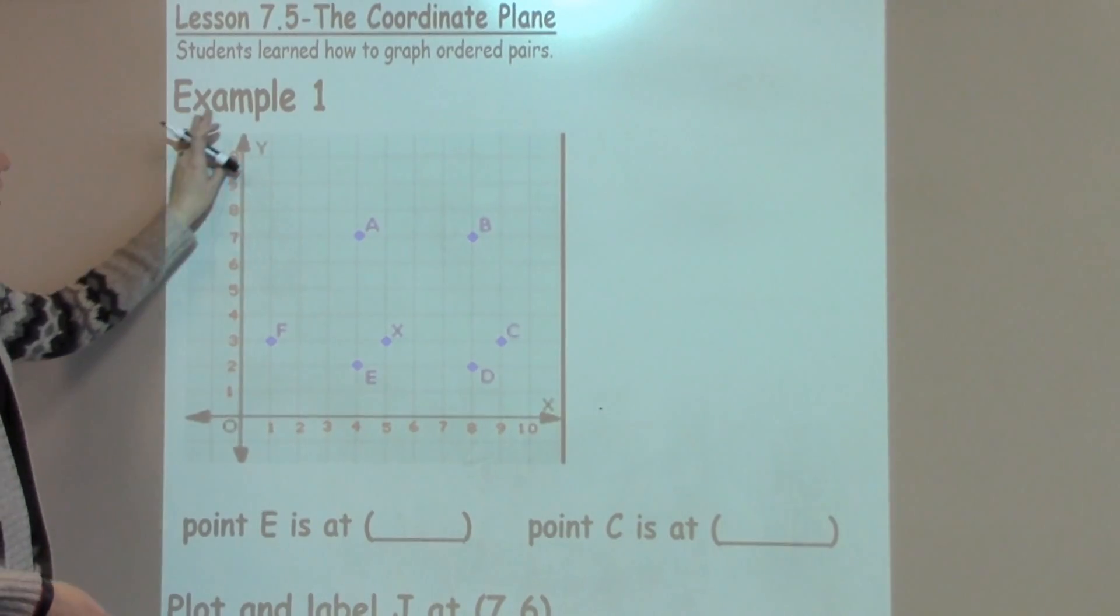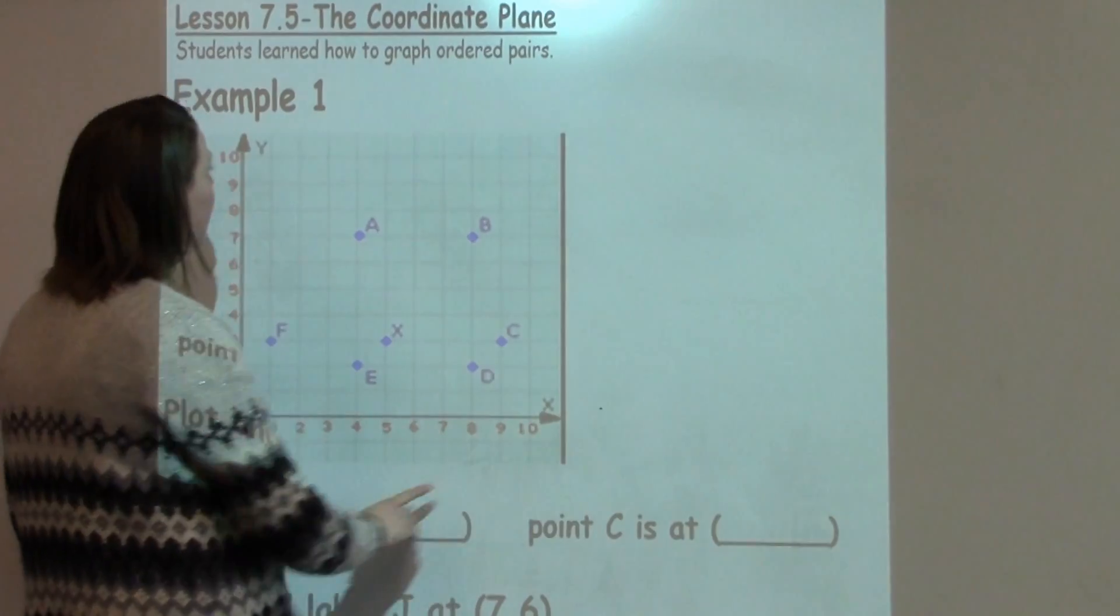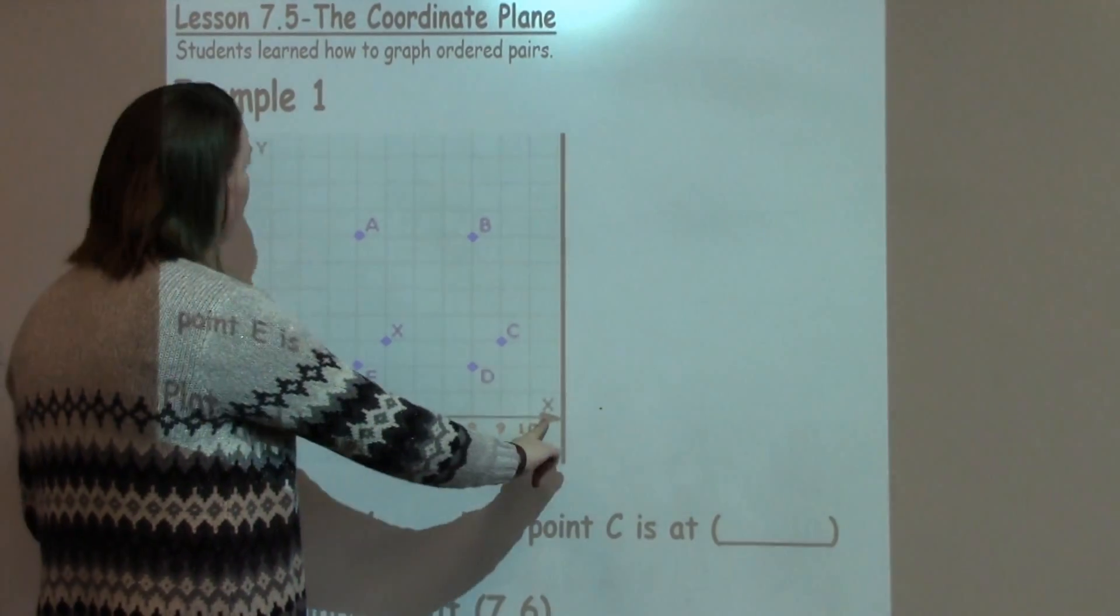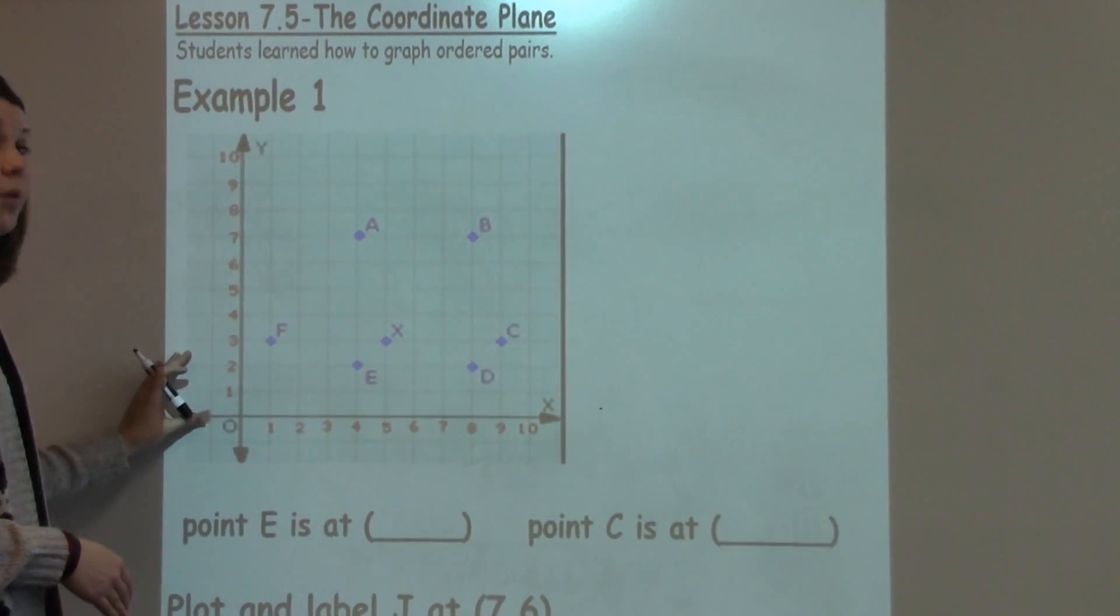So a few things when we're looking at our coordinate plane in quadrant 1. Some things to note, we've got our x and our y. Notice that our x is going horizontal and our y is vertical. This is going to be really important for students to remember as they work to solve these problems.